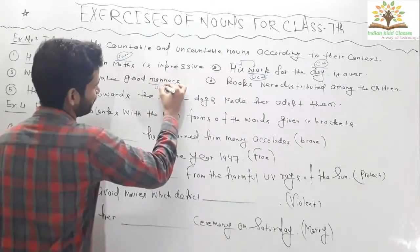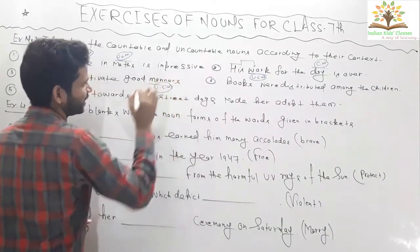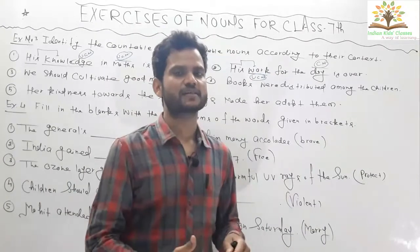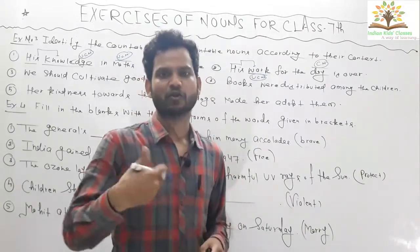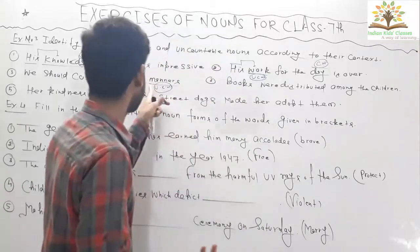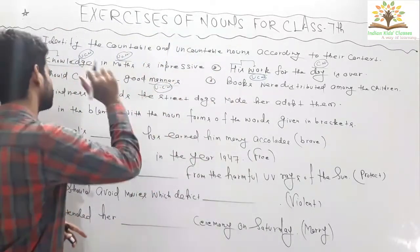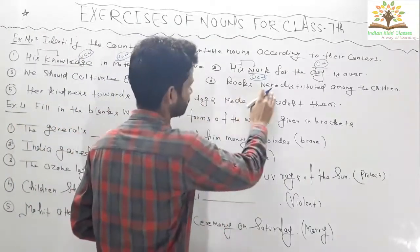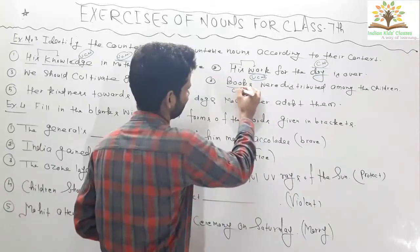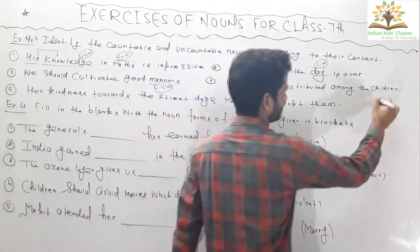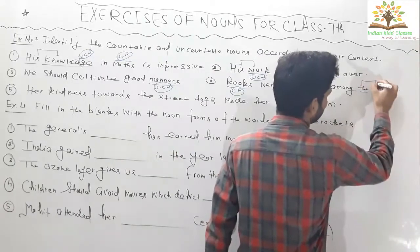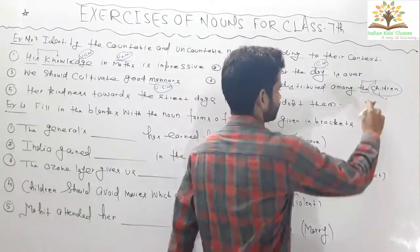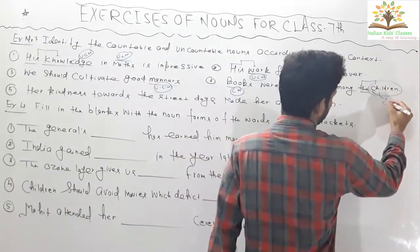Question three: 'We should cultivate good manners.' Manners is an uncountable noun because it is related to your behavior. Whatever is related to behavior cannot be seen, counted, or touched — it can only be felt. Question four: 'Books were distributed among the children.' Books is a countable noun because we can count books, and children is also a countable noun.